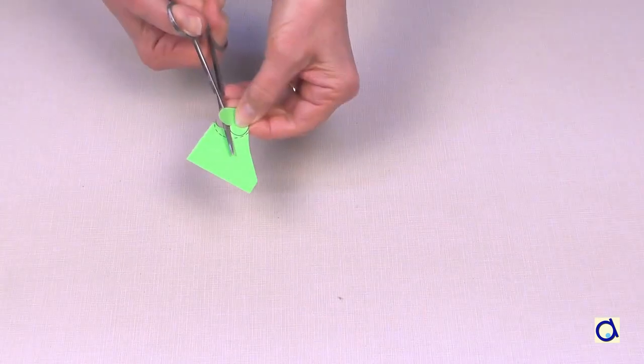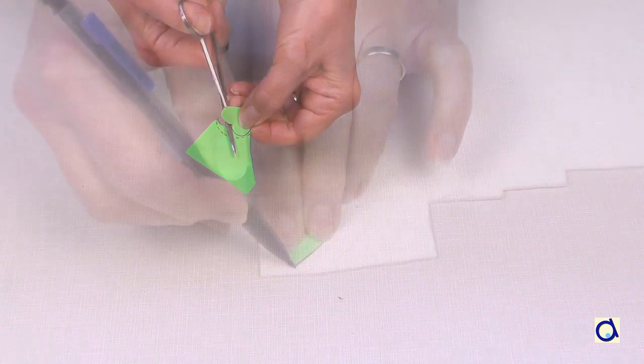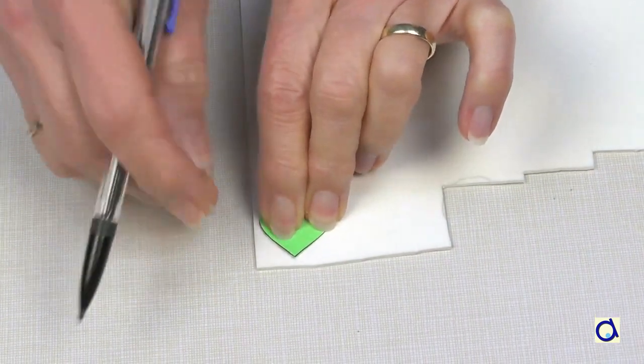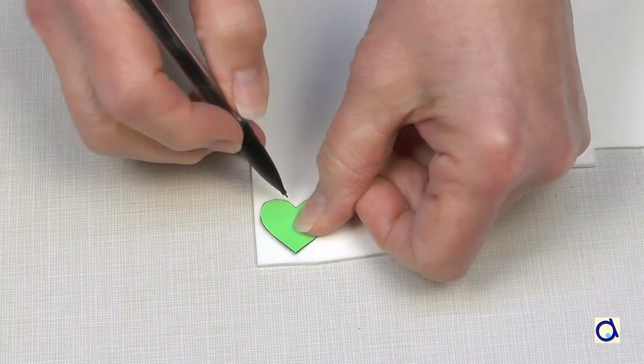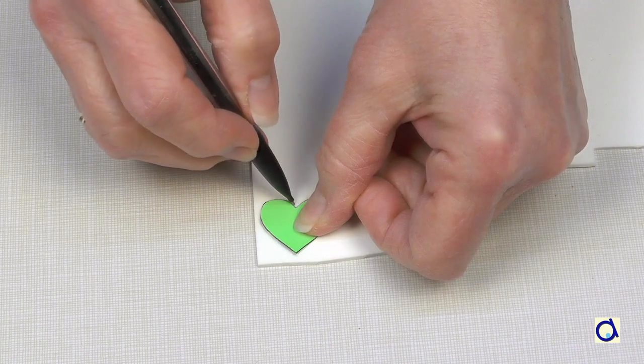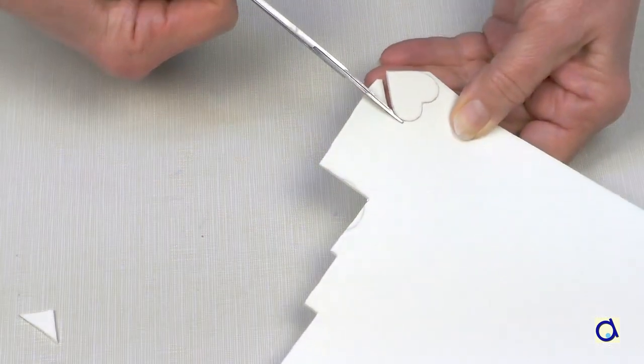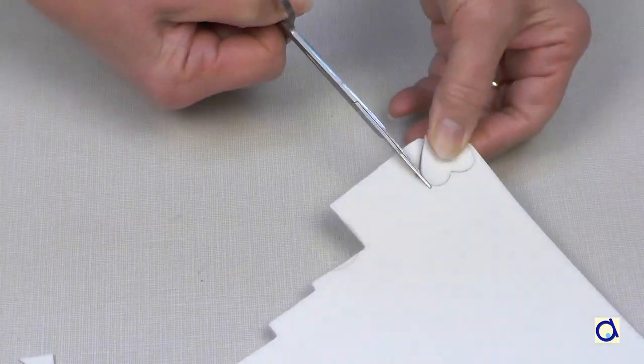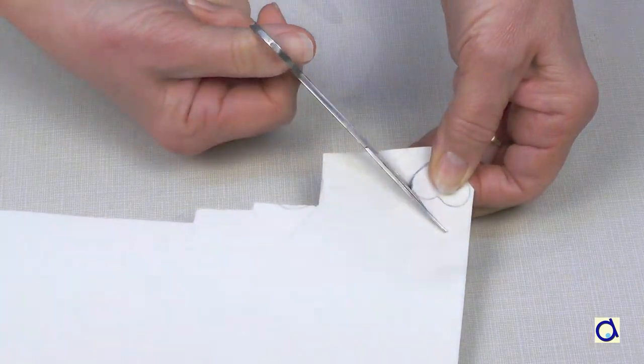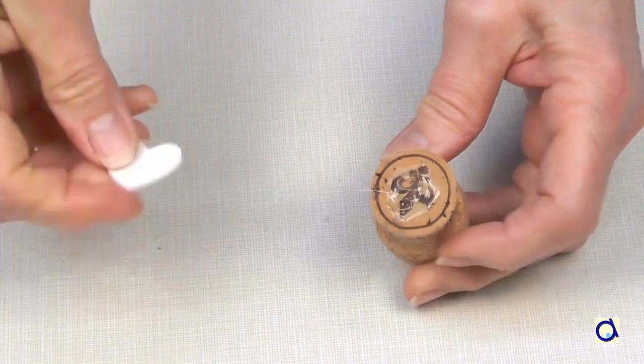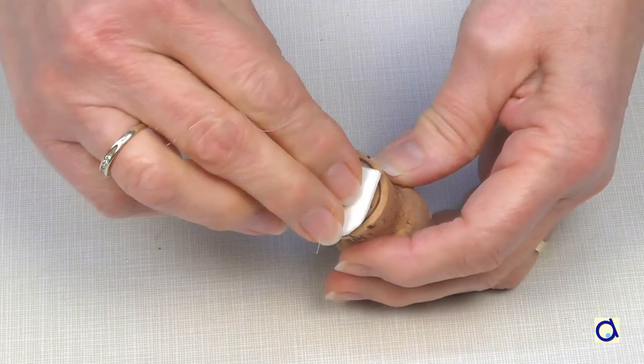Print the templates from the document and cut them out. Place the pattern of your choice on a sheet of foam and trace the outline. Take small scissors and cut out the outline you just drew. Glue the foam shape to the bottom of the cork with hot glue.